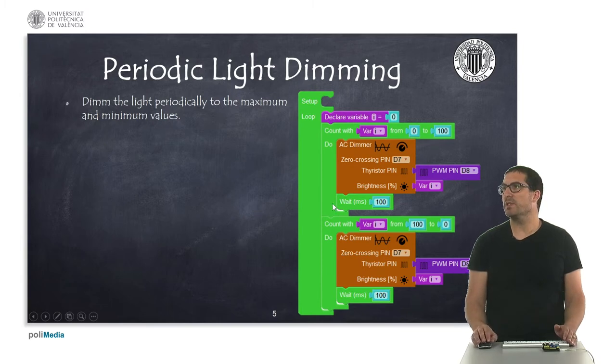We're doing this just by performing this operation on the loop, so we can control the brightness here from 0 to 100 and then from 100 to 0, and we do that periodically.